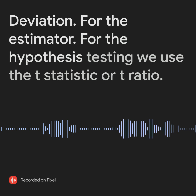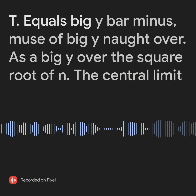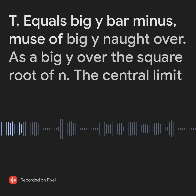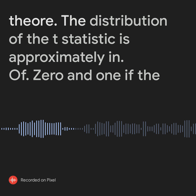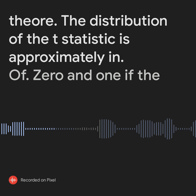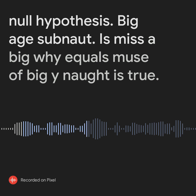For hypothesis testing, we use the t-statistic or t-ratio: t equals Y-bar minus mu sub Y-naught, over s sub Y divided by the square root of n. By the central limit theorem, the distribution of the t-statistic is approximately N(0,1) if the null hypothesis H_0: mu sub Y equals mu sub Y-naught is true.